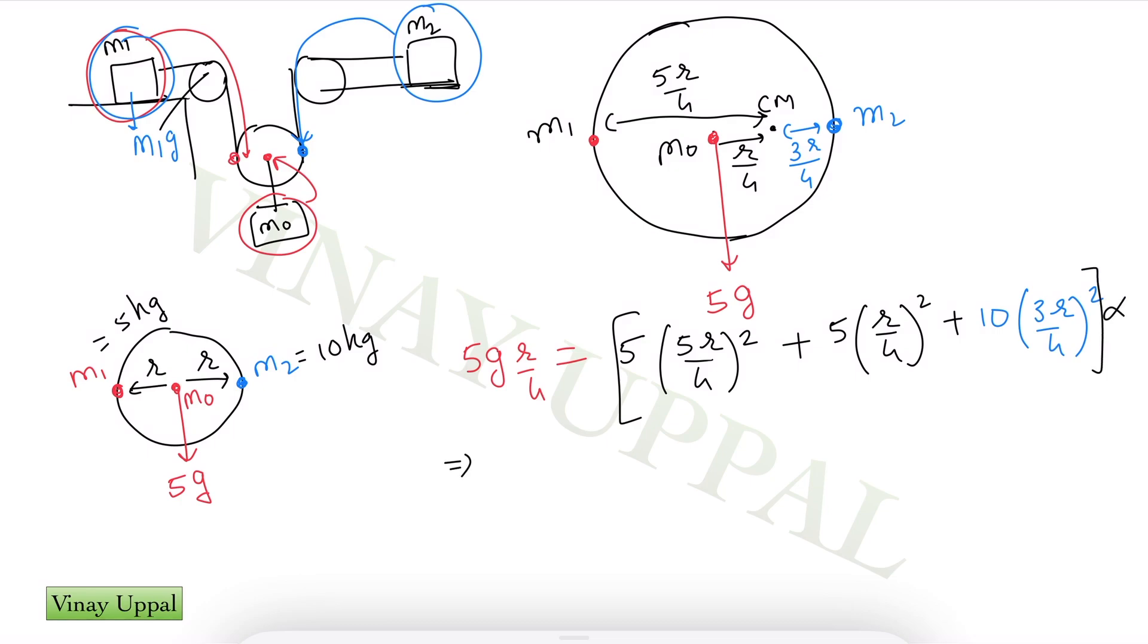Very straightforward calculation. I will leave it up to you. You will get alpha as 100 by 11 radian per second squared. Just substitute G as 10 and small r the radius as is being given as 10 centimeters. Make sure you convert it into meters. You will get this alpha and omega is simply alpha delta t. Delta t is given to us as 0.22 seconds. That will leave us with the answer of 2 radian per second. And that's your answer.